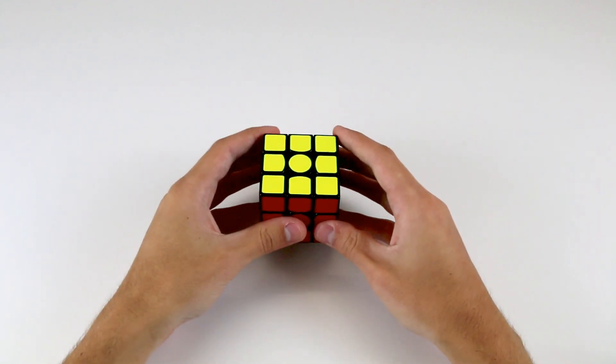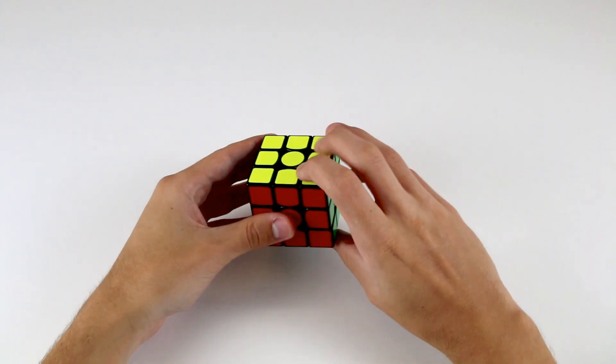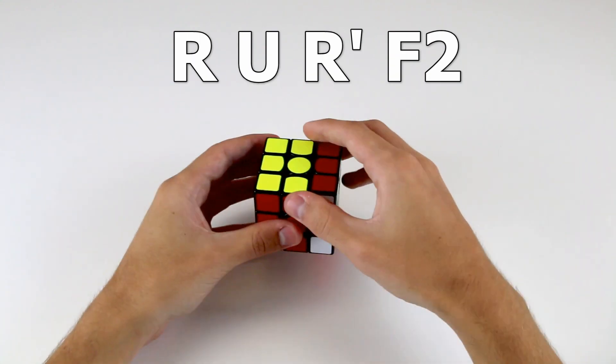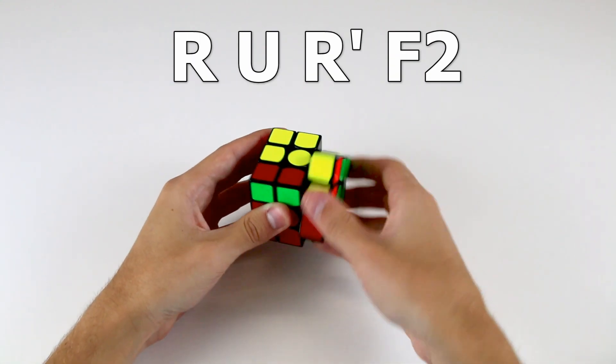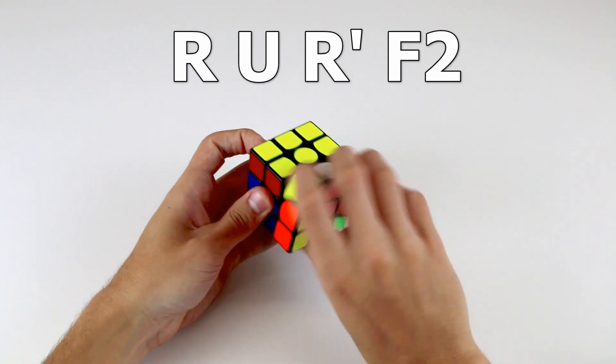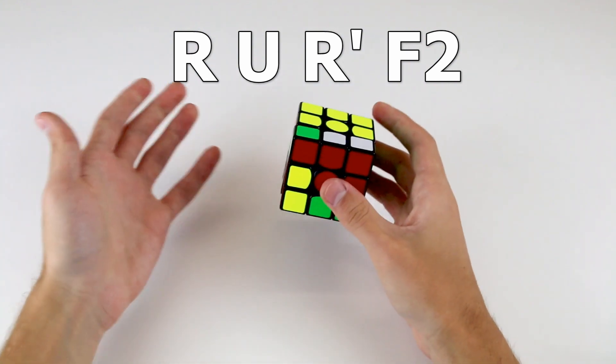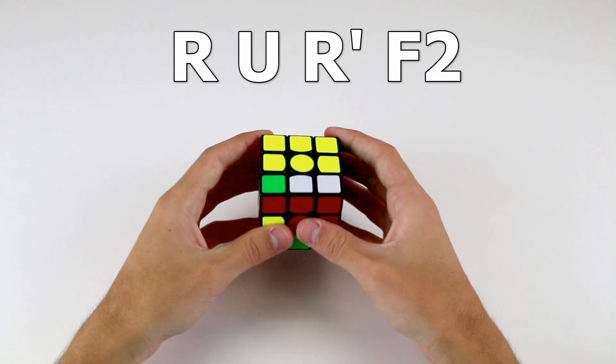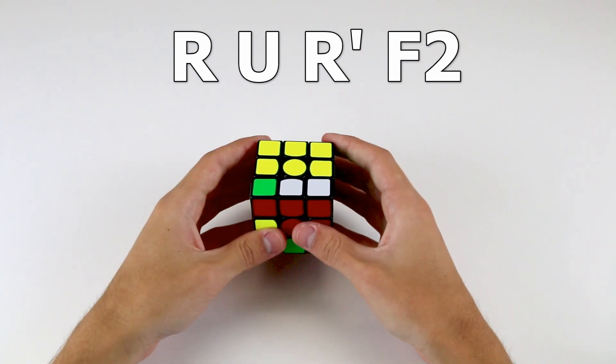So we can use the notation that we developed to describe algorithms or sequences of moves. So a simple algorithm could be something along the lines of R U R prime F2. And that's just four random moves, but you can see how with this notation we can clearly describe which faces to turn.